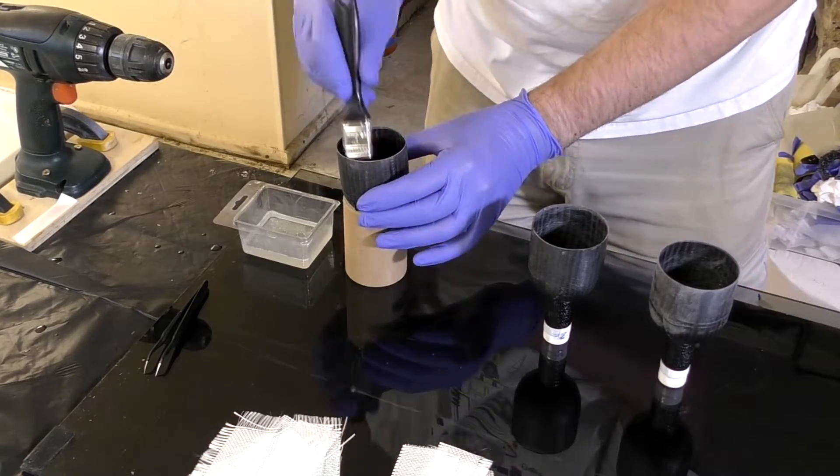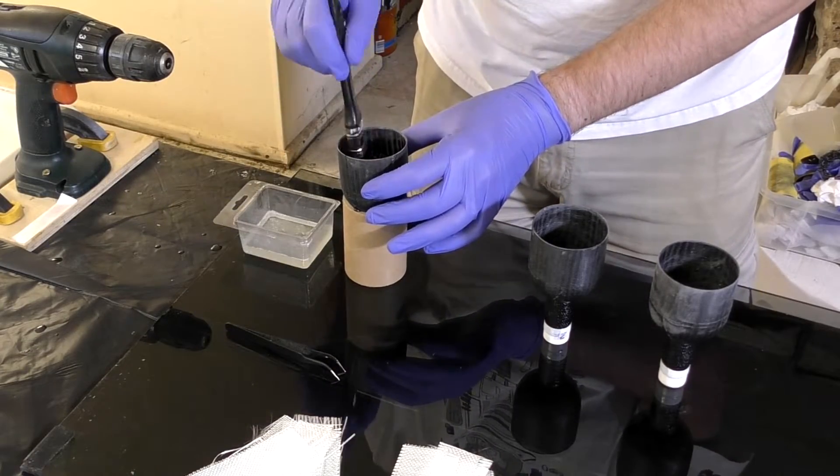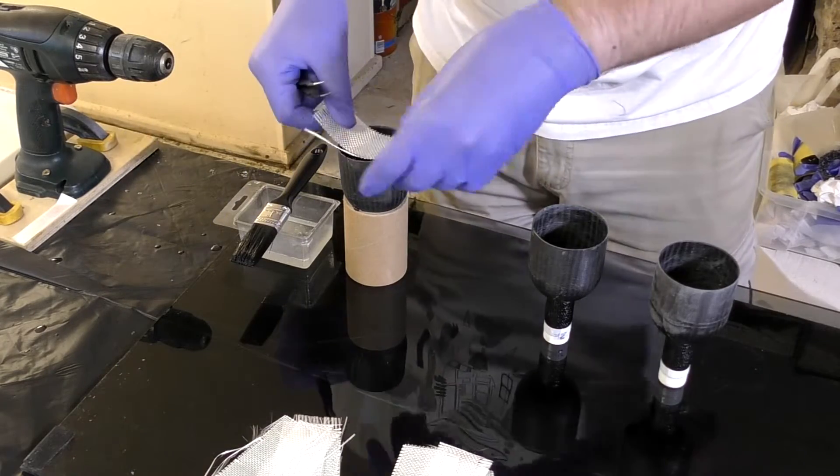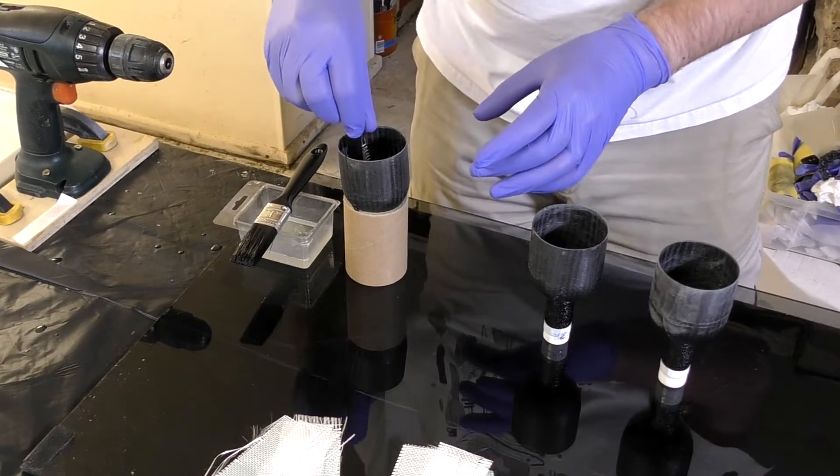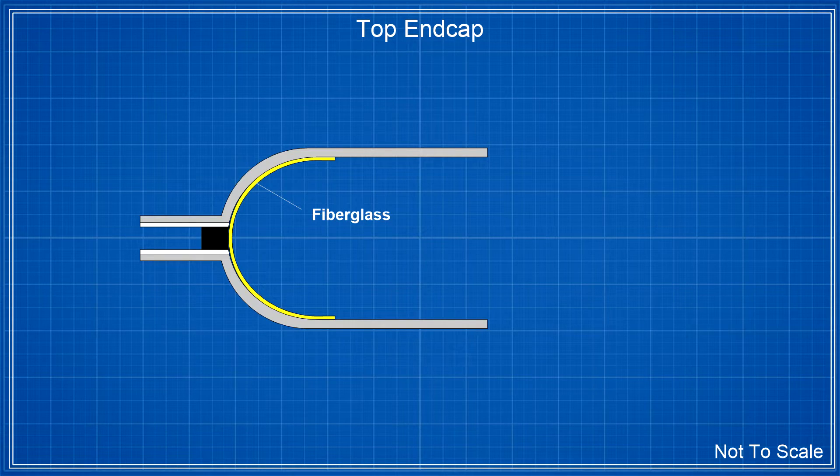To fully seal the end cap against the pressure and any air leaks, we add a thin layer of 85 GSM fiberglass to the inside. We just overlap a number of the pieces. This is what the cross section looks like now.